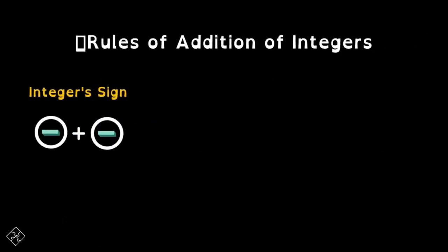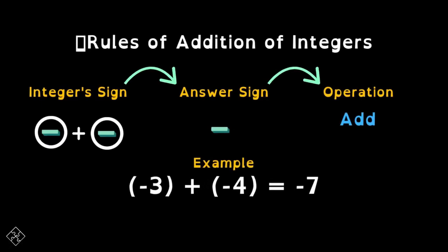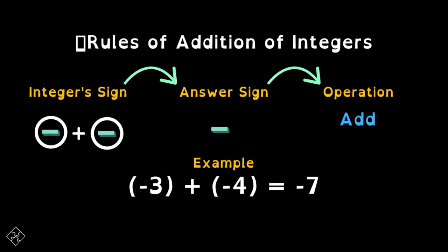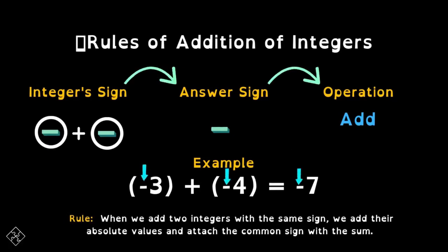Yung pangalawa is the integer sign na negative and negative. Kapag pinag-add natin yung negative sa negative, the answer sign is negative. Ang operation, since parehas ang sign, is addition. For example, we have negative 3 plus negative 4, that is equal to negative 7. Since negative 3 and 4 are both negative integers, ikokopihin lang natin yung kanilang sign, then we add the absolute values: 3 plus 4 is 7, so the answer is negative 7.